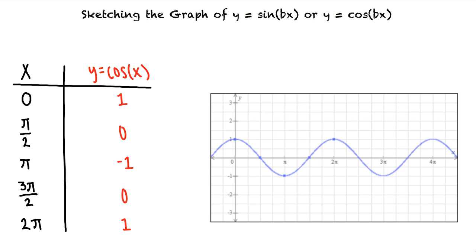Multiplying x by a constant will shrink or stretch the graph horizontally. How would we know what key points to graph in our new function? Let's take a look at an example.